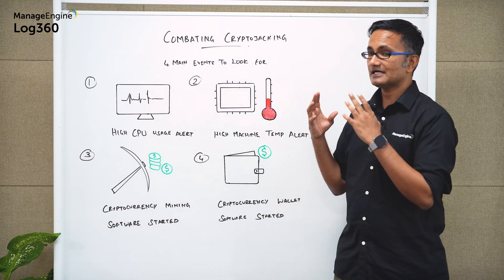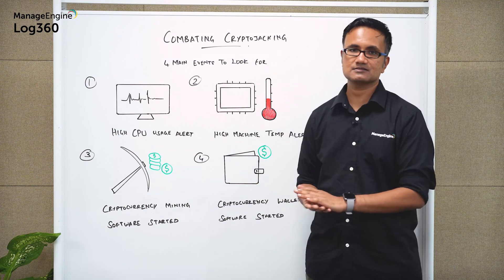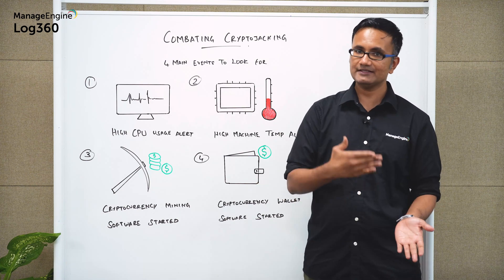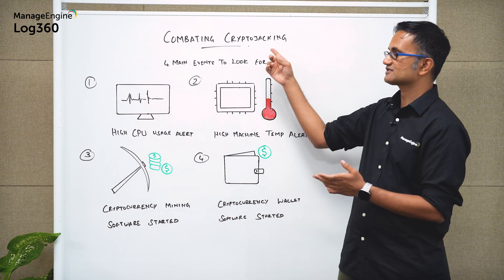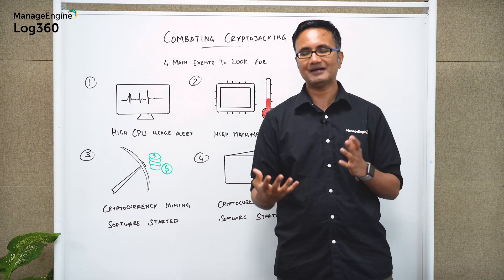But then it is done illegally. That is somebody uses someone else's computing power to mine cryptocurrency. That's when it becomes crypto jacking. So crypto jacking is the illegal form of crypto mining.